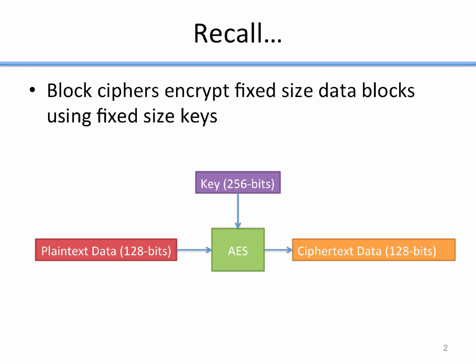Recall that a block cipher encrypts a fixed size block of data using a fixed size key. In this particular example we have a key of 256 bits and we're going to use that along with AES, which is a block cipher, to encrypt 128 bits of plaintext and produce 128 bits of ciphertext. With block ciphers you're only encrypting a fixed size block — you take in 128 bits, you output 128 bits. The algorithm encrypts exactly one block every single time.